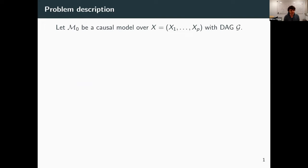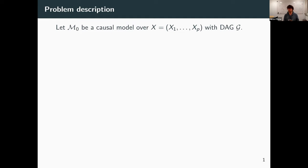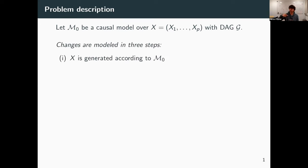Let me give my flavor to what I think this root cause analysis setup boils down to. We start from a fixed causal model M0 over observed variables X, with a fixed DAG underneath. I consider three steps: first, the system generates data according to this causal model.